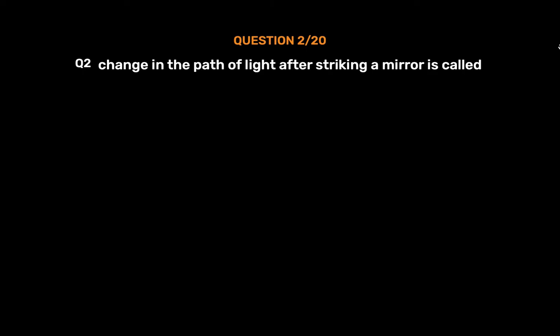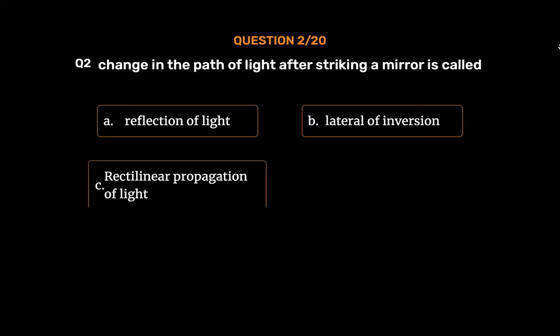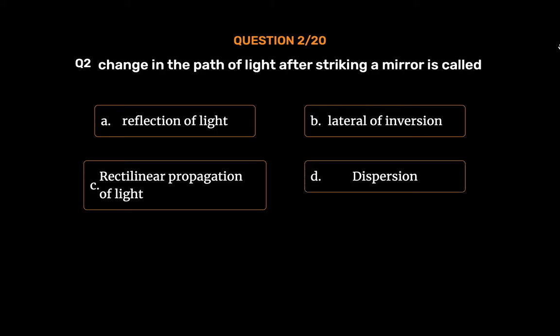Question No. 2: Change in the path of light after striking a mirror is called — Option A: Reflection of Light, Option B: Lateral Inversion, Option C: Rectilinear Propagation of Light, Option D: Dispersion. The correct answer is Option A: Reflection of Light.